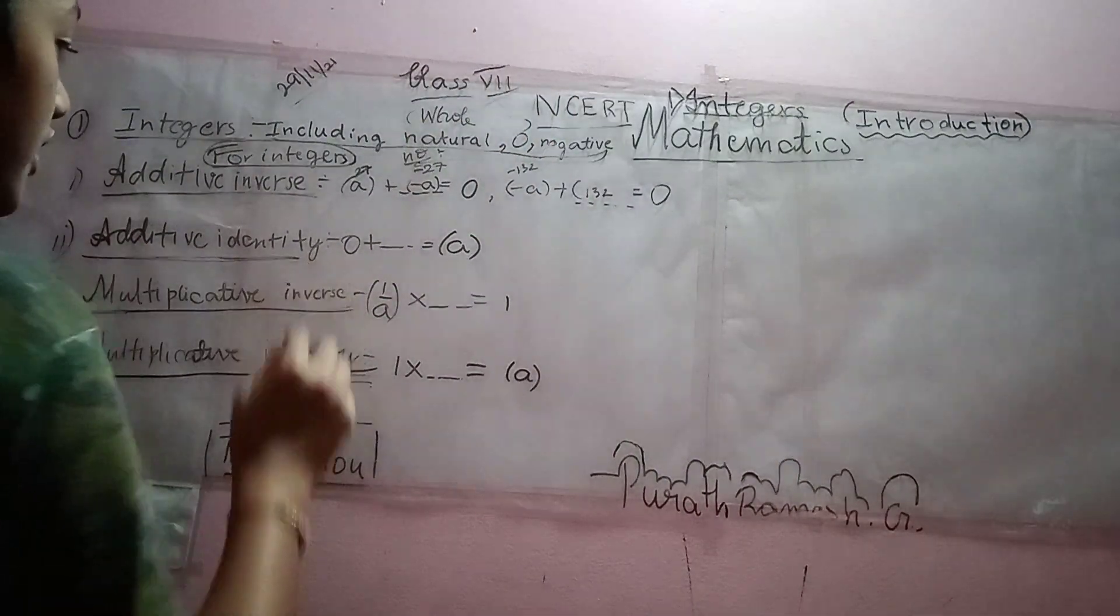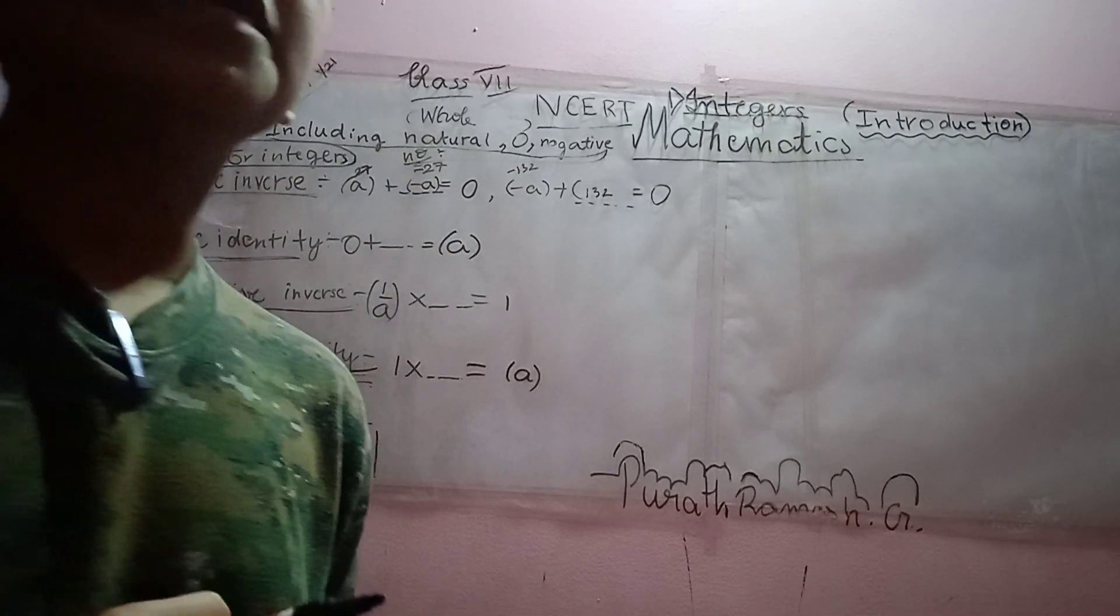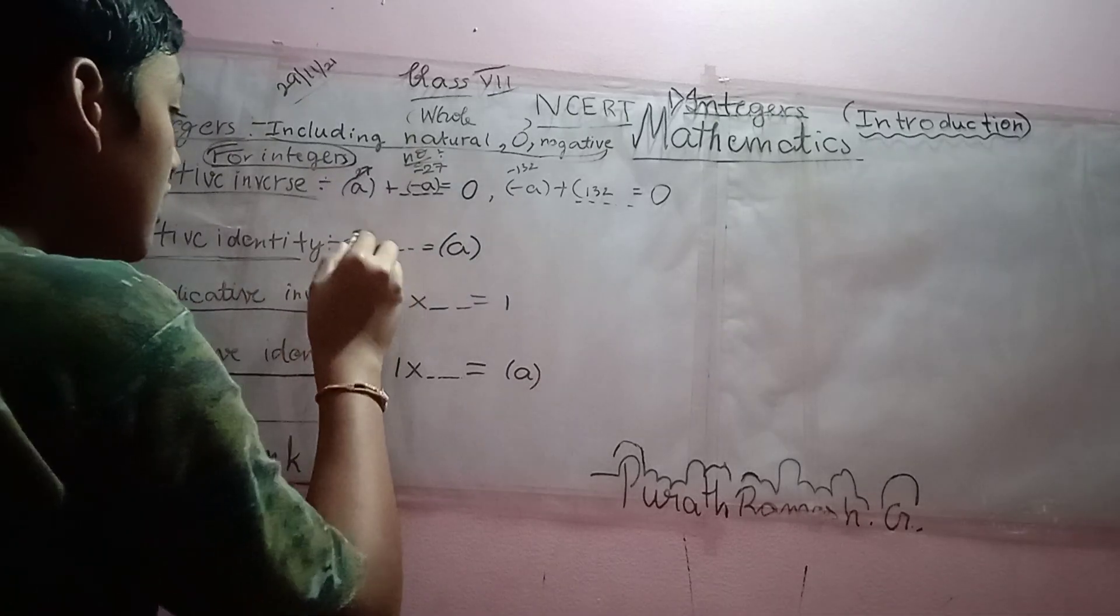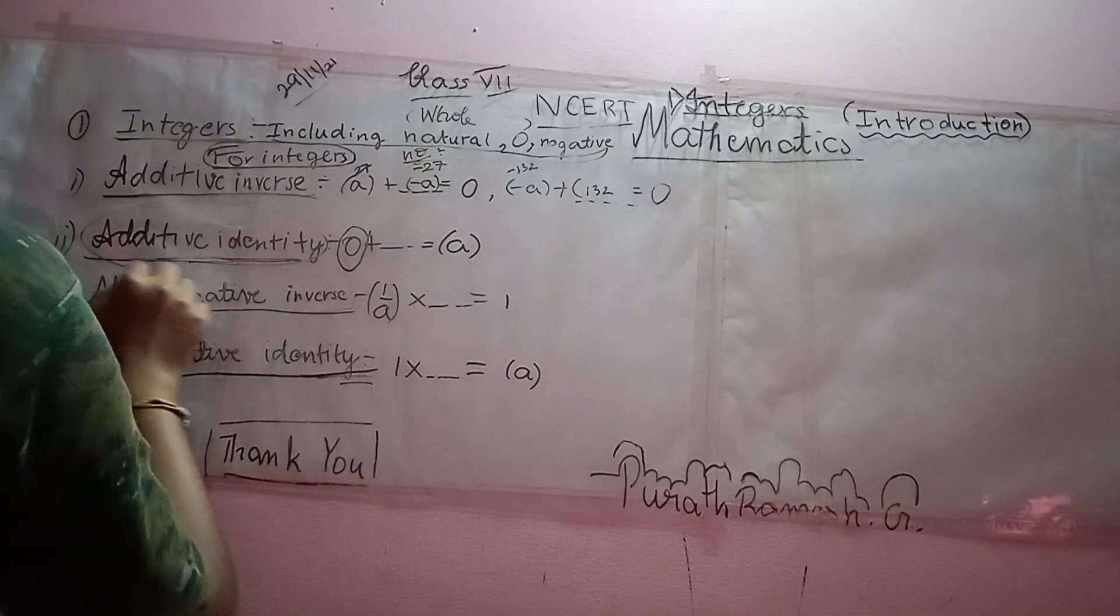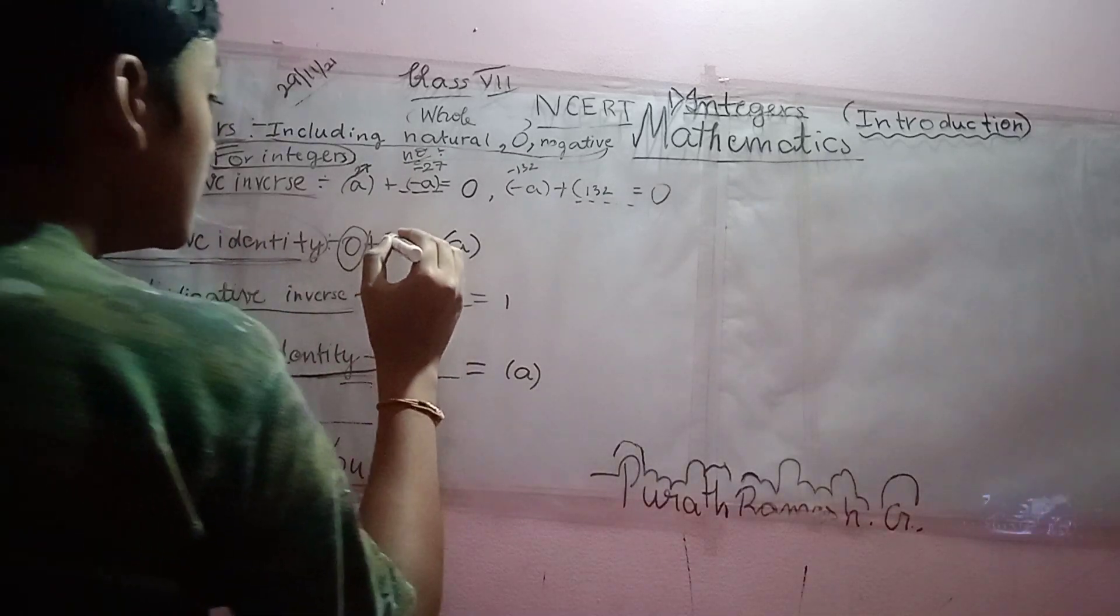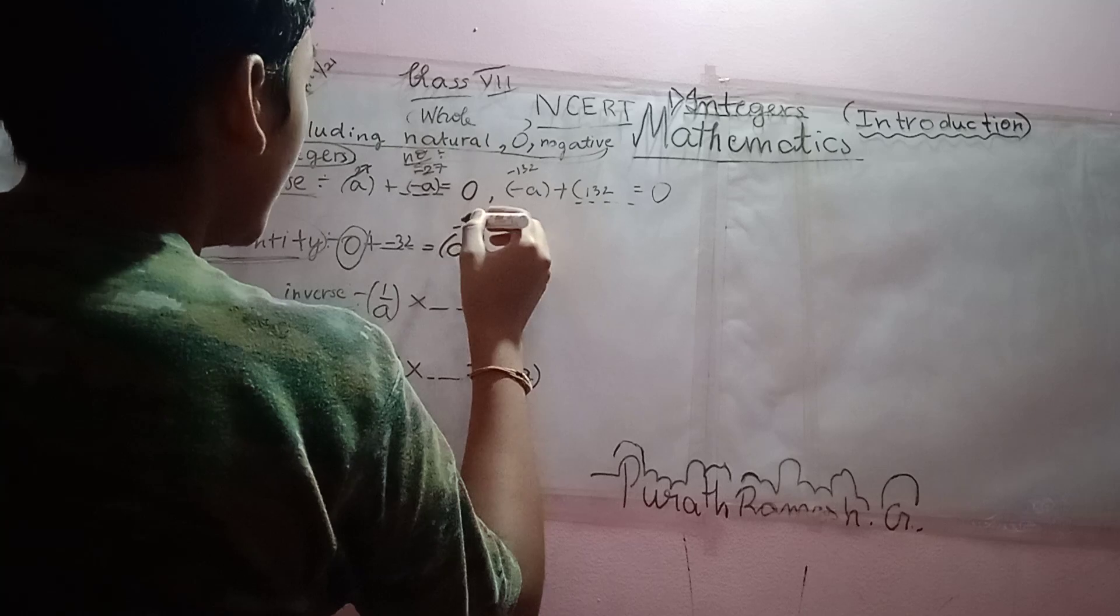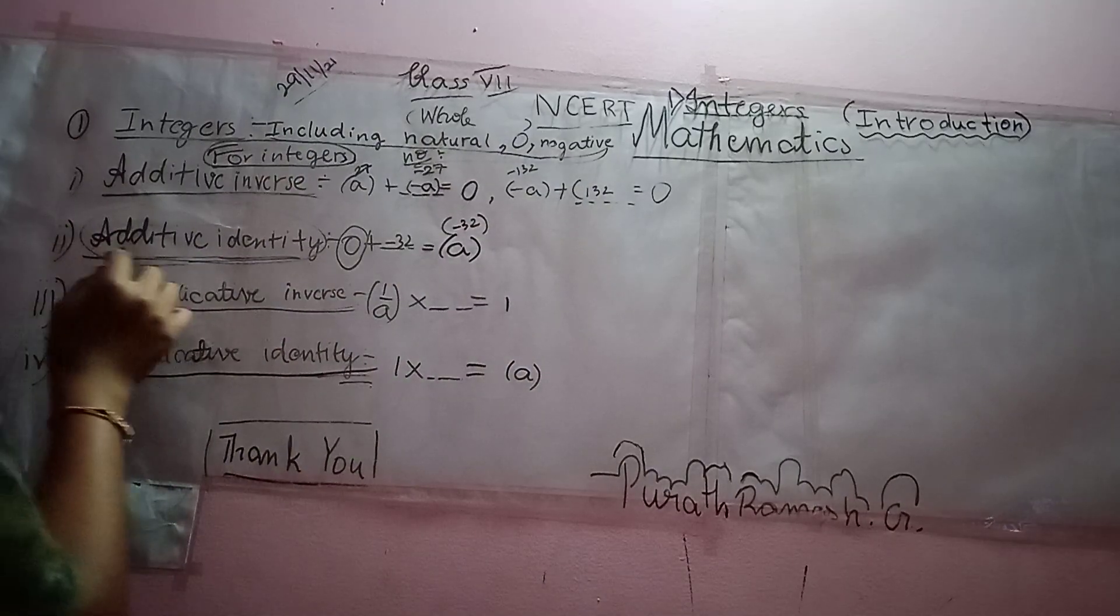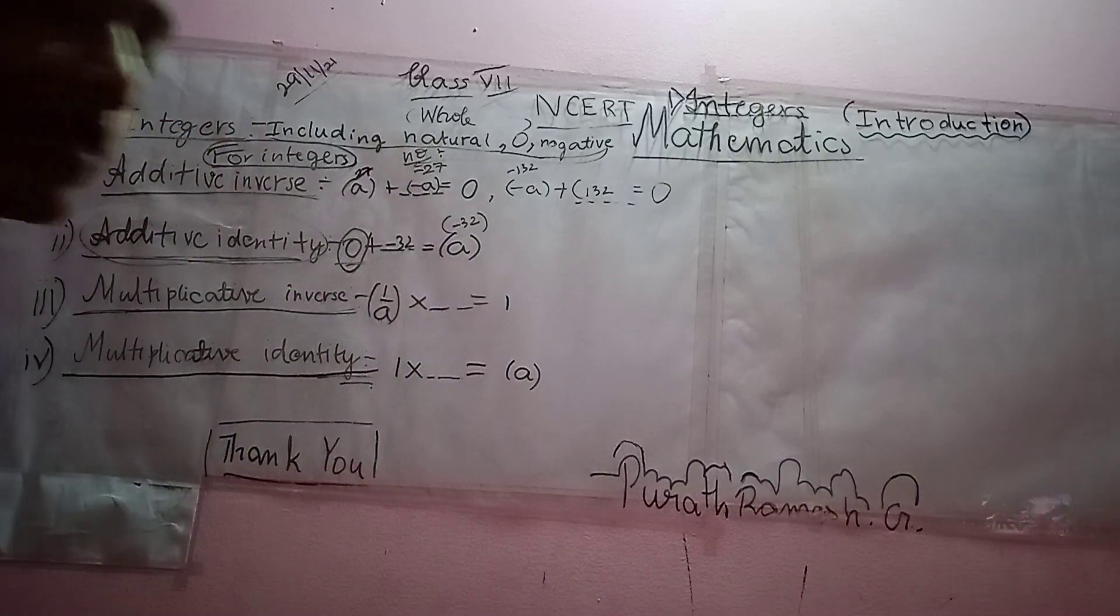Next is additive identity. If we add any number to 0, we will always get back the same number. So, 0 is known as the additive identity for integers. Let me add minus 32. I am going to get minus 32 back. So, additive identity for integers is known as 0.